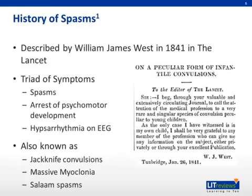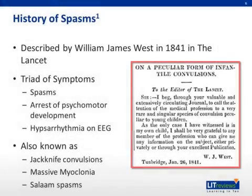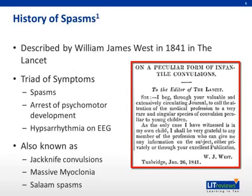History of Spasms. Infantile spasms were first described by William James West in 1841 in The Lancet. West was an English surgeon who was describing symptoms in his own son, James Edwin. West noted bobbings that cause a complete heaving of the head forward towards the knees, and then immediately relaxing into an upright position.